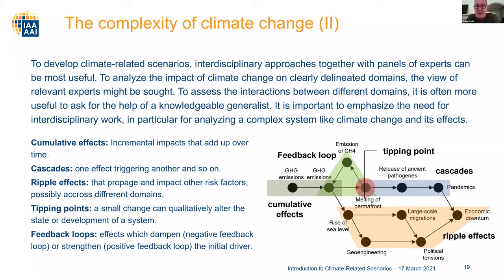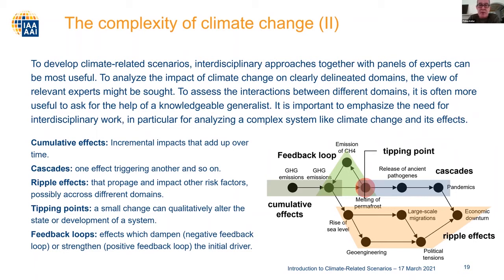The complexity of climate change forces actuaries not to work on their own, but in interdisciplinary teams. To analyze the impact on a clearly delineated domain like the environment, it might be sufficient to consult with biologists or environmentalists. But to assess the impact on different domains and how they are interlinked, it is necessary to combine the knowledge of generalists and specialists. There are many different effects of climate change on these different domains.